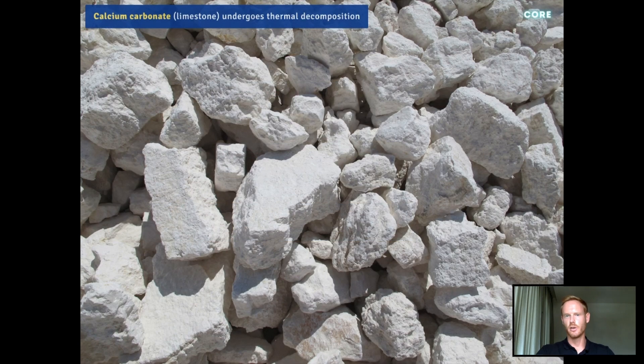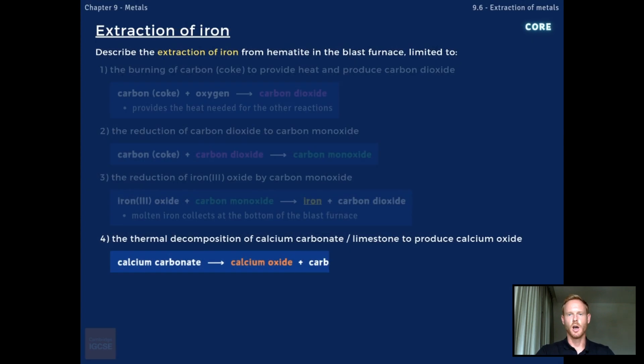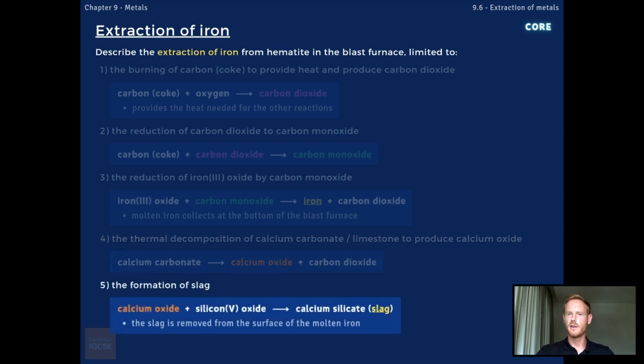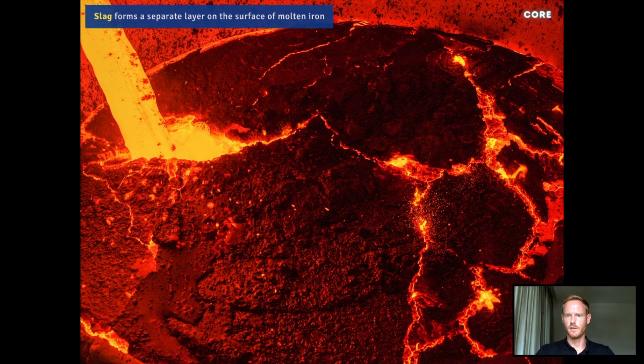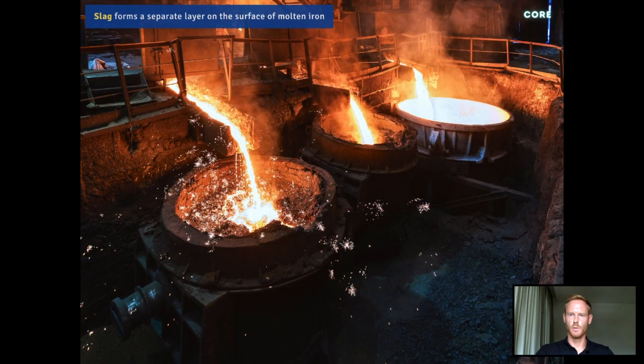Stage 4 is the thermal decomposition of calcium carbonate or limestone to produce calcium oxide. Calcium carbonate decomposes or breaks down under the high temperature of the blast furnace to produce calcium oxide and carbon dioxide gas. Finally, stage 5 is the formation of a waste material called slag. The calcium oxide from the previous reaction reacts with silicon 4 oxide, which is the main impurity in iron ore, to form molten calcium silicate or slag. The slag, which forms a separate layer on the surface of the molten iron, is removed, leaving only the pure metal, which is siphoned off from the bottom of the furnace.